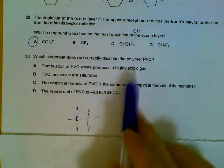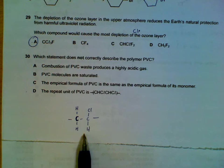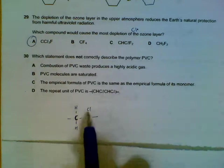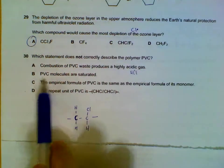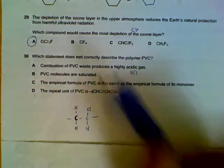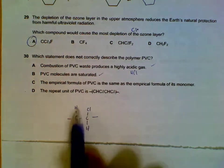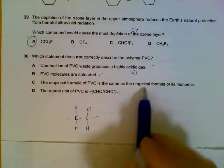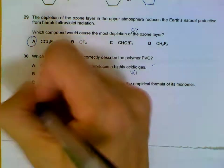Question 30: PVC. The repeat unit is drawn here, only one chlorine here. So it produces a highly acidic gas, it can produce HCl. Your PVCs are saturated, the polymer is saturated, that's true. And empirical formula C₂H₃Cl, same as the monomer. The repeat unit is not correct here, it's only one chlorine instead of two. So D is wrong.